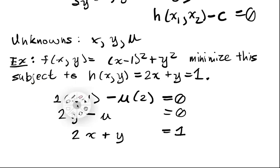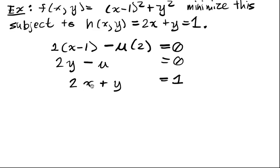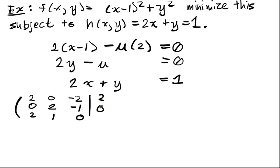Well, this is now a linear system. So let's form the augmented matrix and solve it. Well, the linear system in x, y, and μ is going to be 2, 0, -2; 0, 2, -1; 2, 1, 0. And the augmented part is 2, 0, 1. So the first thing we do is we subtract off 1 of row 1 to obtain